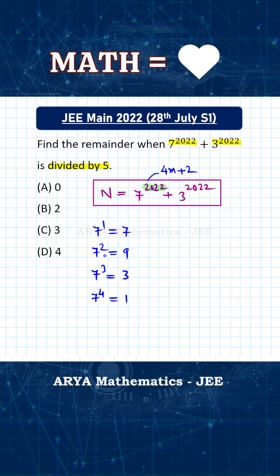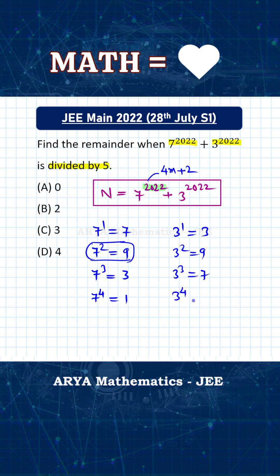Similarly, for different exponents of 3: 3 raised to 1 is 3, 3 squared gives unit digit 9, 3 cubed gives unit digit 7, and 3 raised to 4 gives unit digit 1. The same pattern repeats. For 3 raised to 2022, the exponent is also of the form 4m + 2, so the digit at unit place for 3 raised to 2022 is also 9.